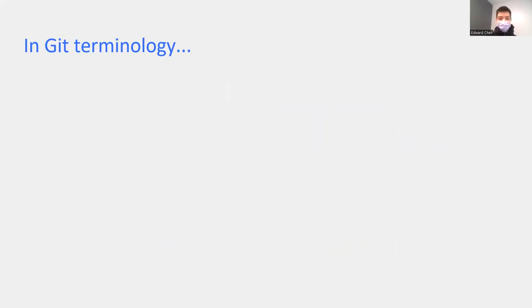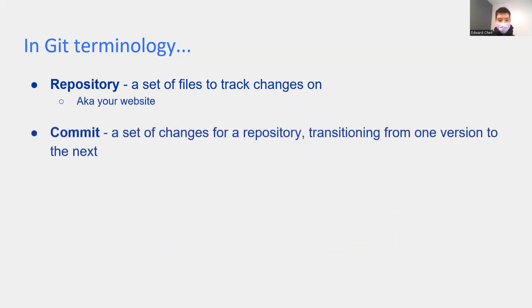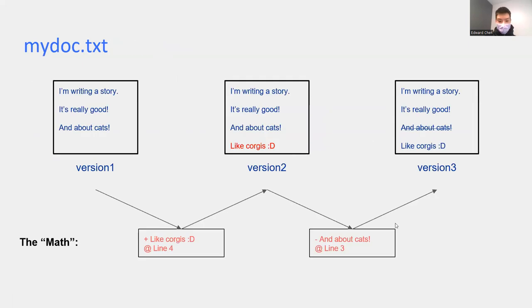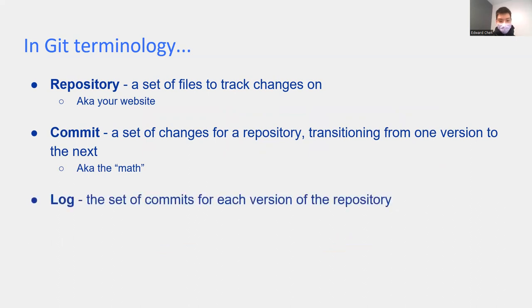There are some important terms to introduce. In Git terminology, a repository is a set of files that you want to track changes on — in Web Lab, it's likely to be your website. A commit is the set of changes you're making from one version to another; for example, adding 'like corgis' would be one commit, and deleting 'and about cats' would be another. The log, or commit history, is the set of commits for each version of the repository.